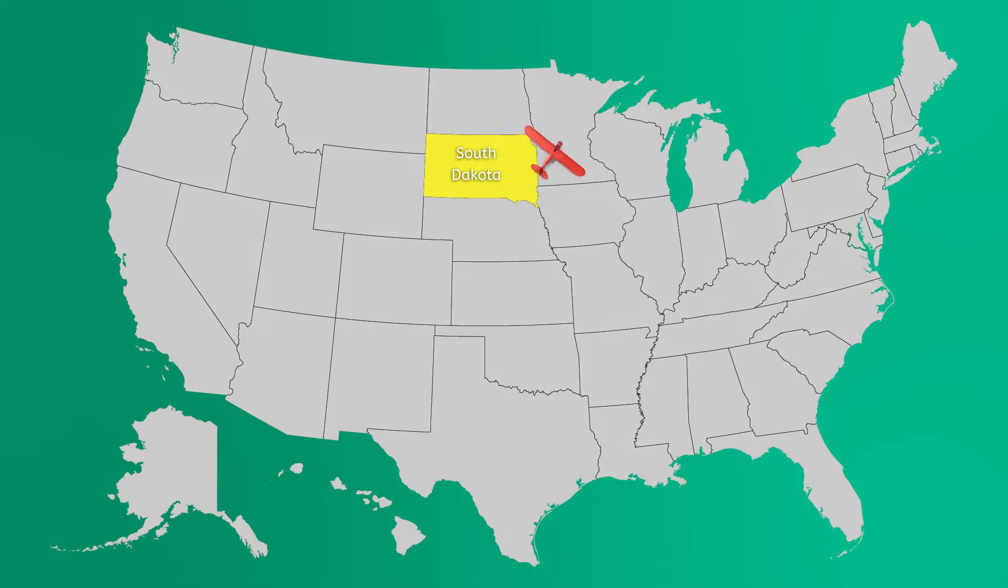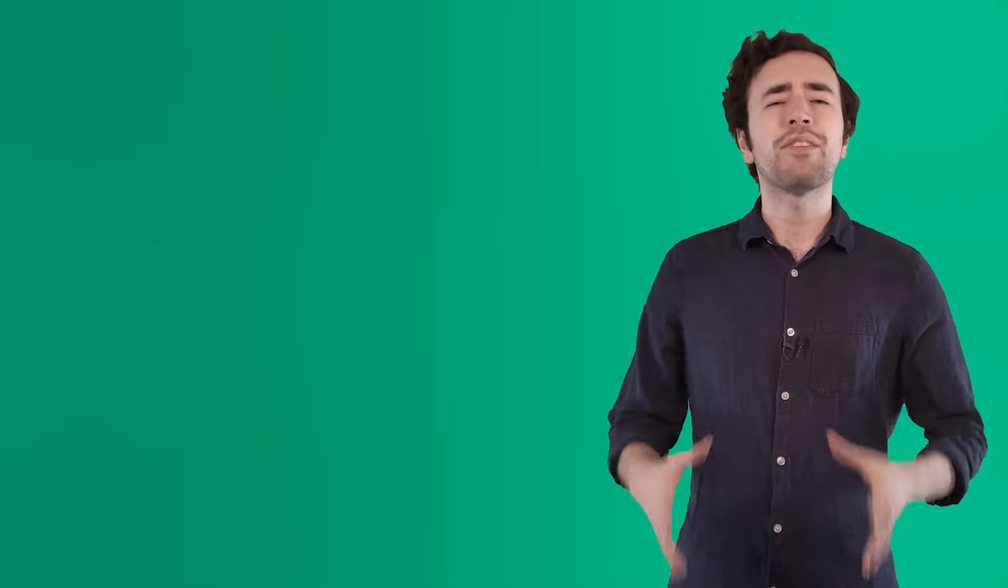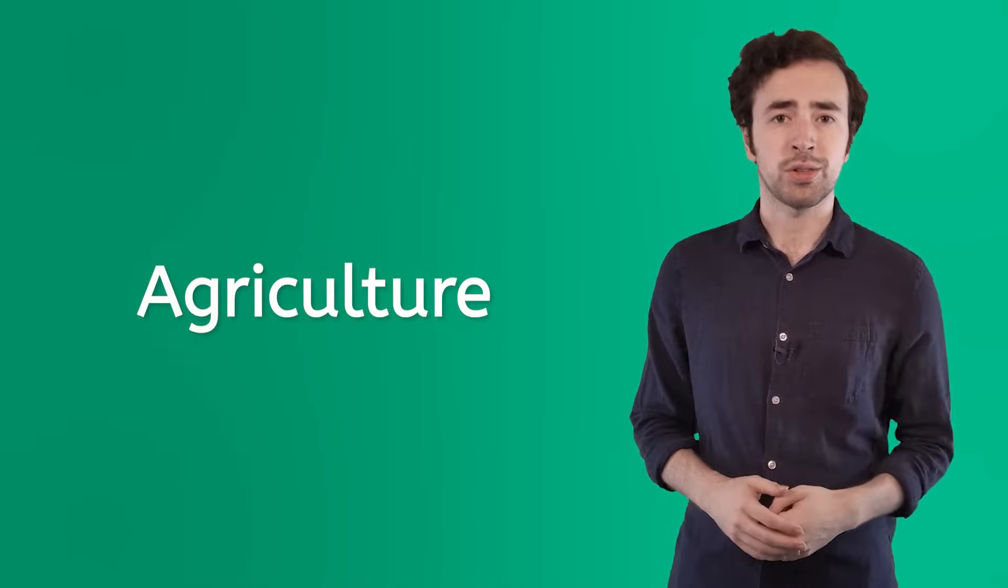And now we take off from one Dakota and land on the second, North Dakota. South and North Dakota have a huge agriculture industry. Do you remember what that word means? Agriculture is when farming and livestock are people's jobs, you know, to make money. North Dakota is 90% farmland, about 27.5 million acres. That's the third largest in the country.